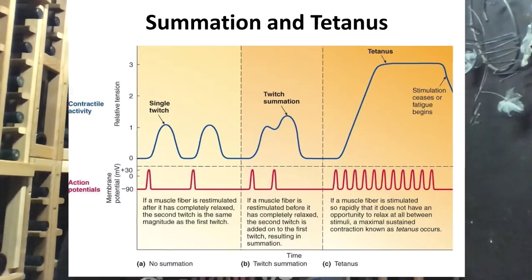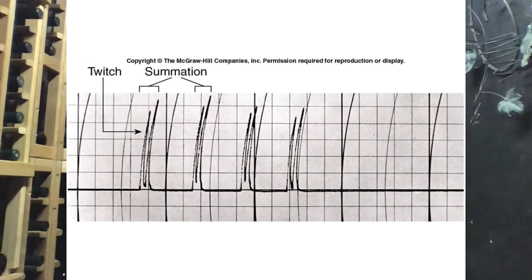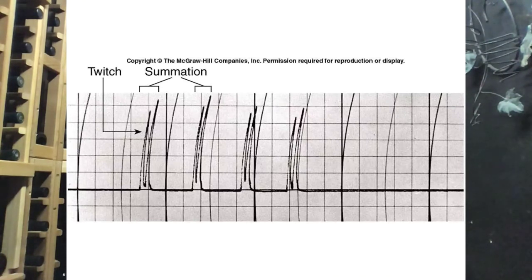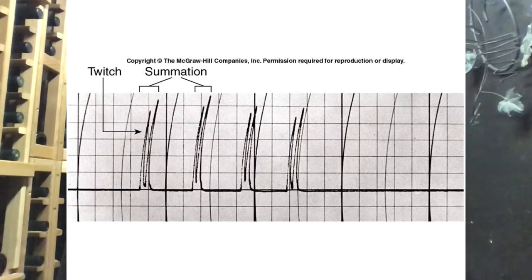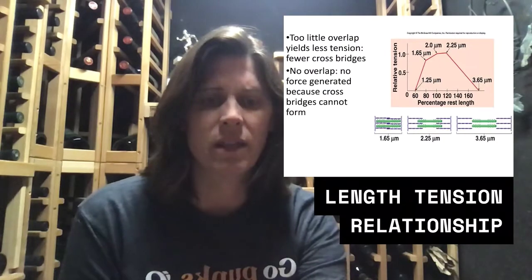Here's what it looks like when you hook your muscle up to an EMG to measure electrical activity. You can see a single twitch, then a second stimulus comes in before the first twitch fully relaxed — the second contraction has summated, so it is actually a stronger contraction. That's another way we can vary the strength.